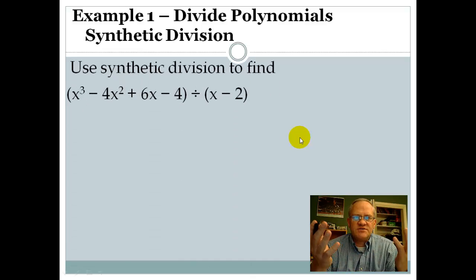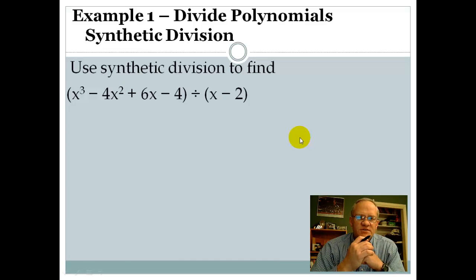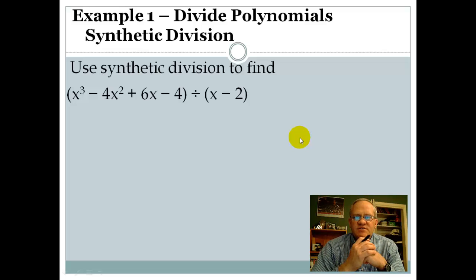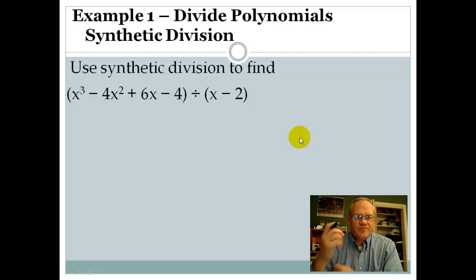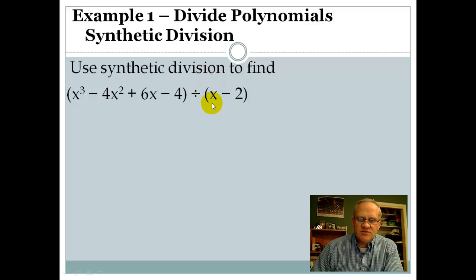Our objective is to divide polynomials using synthetic division. So we had long division and now we've got synthetic division. Let's get right into it. Example number one: we're using synthetic division to find the result. We've got x to the third minus 4x squared plus 6x minus 4, divided by x minus 2. Here's the pattern that we'll go through.